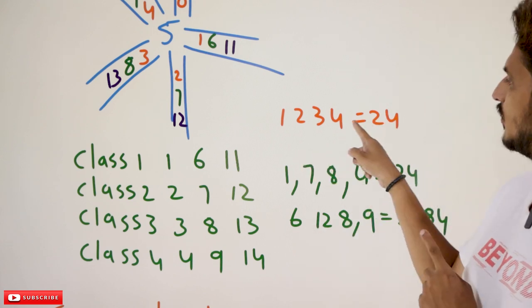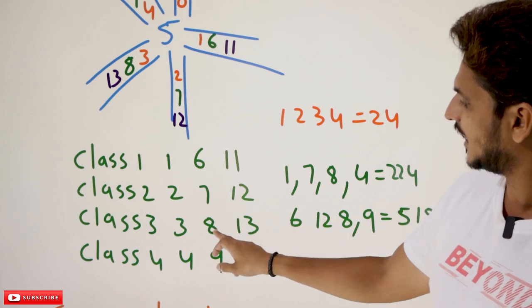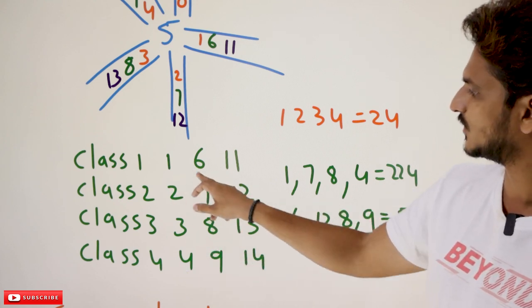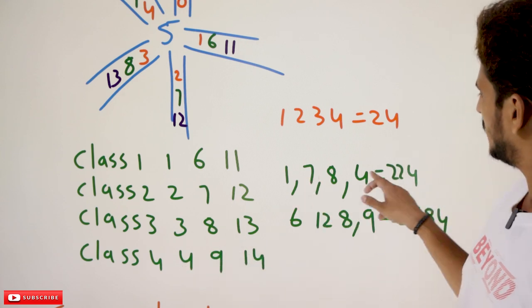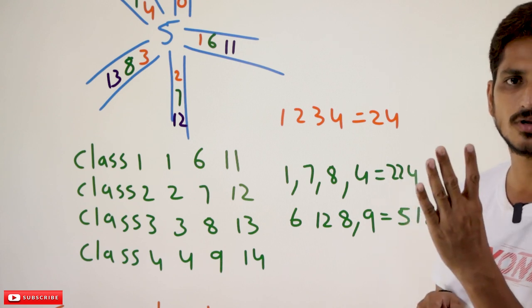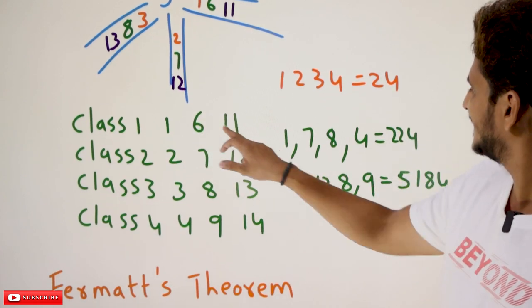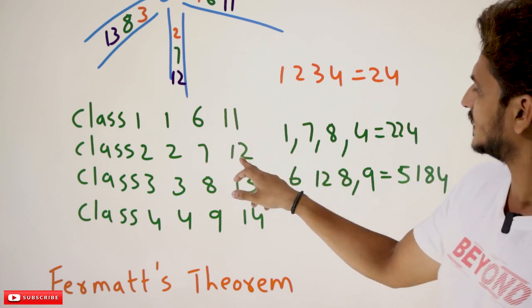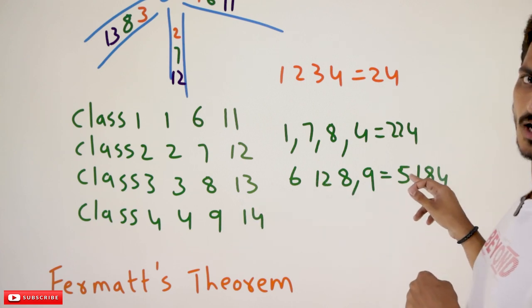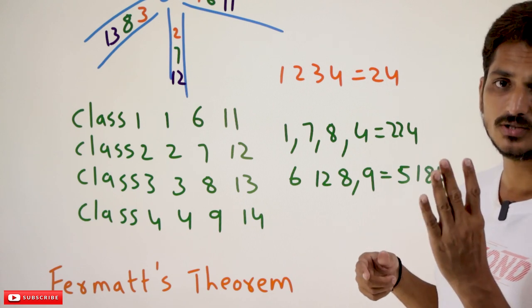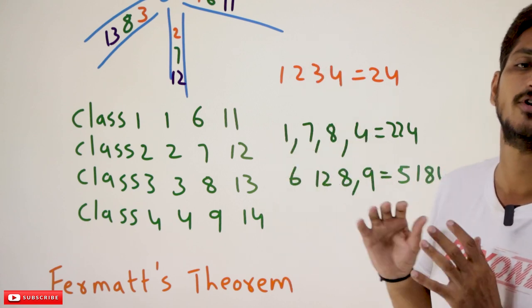1 × 2 × 3 × 4 — the modulus value for 24 is 4. Similarly, we take 1, 7, 8, and 4: 1 from class 1, 7 from class 2, 8 from class 3, 4 from class 4. You multiply them — 224. 224 mod 5 = 4. You are going to get the same modulus value. And one more example: 6 from class 1, 12 from class 2, 8 from class 3, 9 from class 4. You multiply them: 5184. When you divide by 5, the modulus value is 4. You are going to get the same modulus value. So we are going to use these two points in our Fermat's Little Theorem.